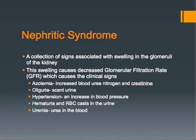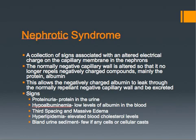Red blood cell casts and blood are excreted into the urine because the swelling of the glomeruli causes small pores in the podocytes to enlarge and allow these bigger molecules through and into the filtrate, which is then excreted as urine.